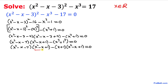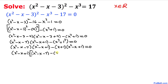Now we can see that this part and this part are in common, so therefore we can factor them out. We get (x squared minus x plus 1) and inside the bracket we write (x squared minus x minus 7) minus (x plus 1), equal to 0.